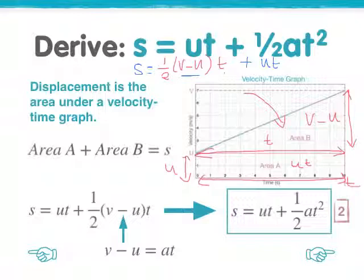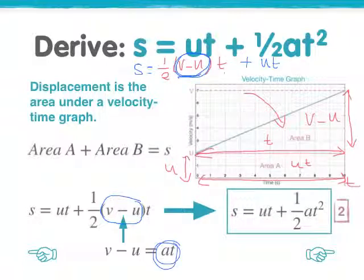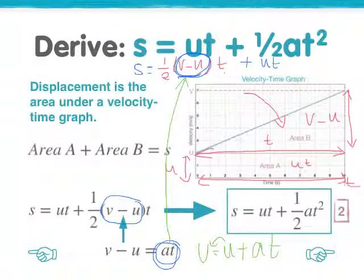Now that's not very tidy, so let's find a way of making it look a bit neater. Let's come down here where it's explained. v minus u, as you can see there, is also equal to at. Where did we get this from? Rewind to the last formula we did just a few minutes ago. v equals u plus at. That means v minus u equals at. So now you put this at in there instead.